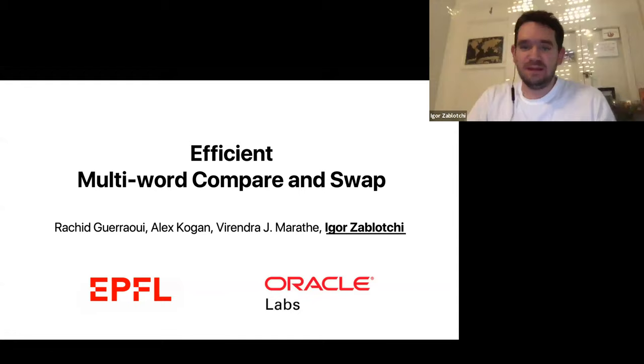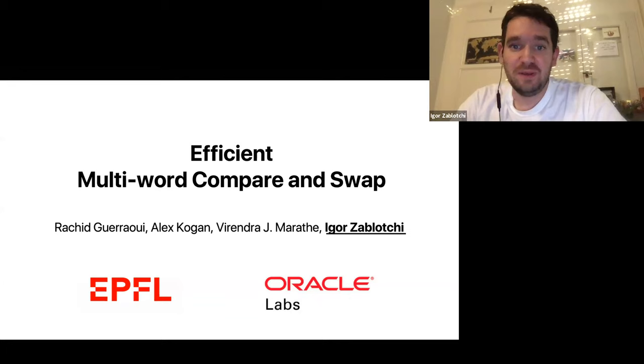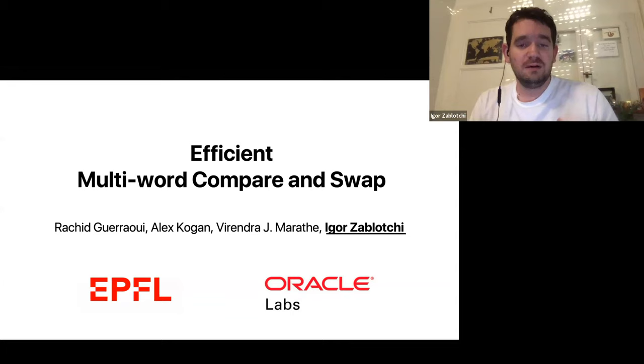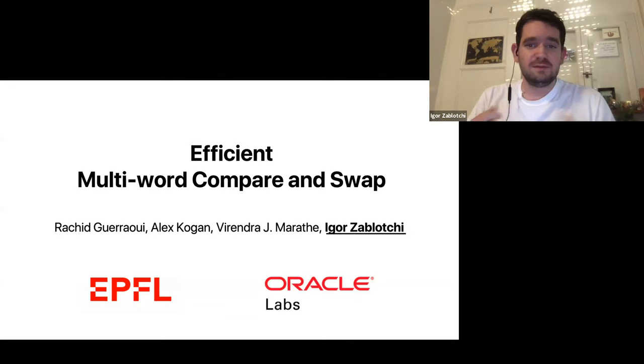Our next paper is 'Efficient Multi-Word Comparison Swap,' and Igor Zablotsky is presenting. Thank you for the introduction. This is joint work with my advisor Ashit Graoui from EPFL and with Alex Kogan and Virendra Marate from Oracle Labs. In a nutshell, our work is about a novel multi-word comparison swap algorithm that is nearly optimal with respect to the number of comparison swap instructions used.